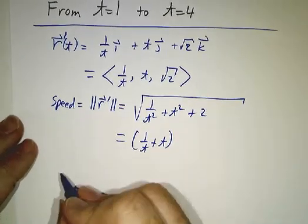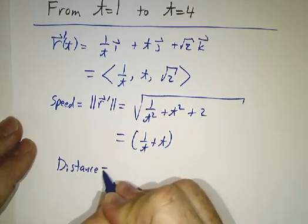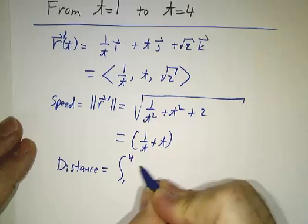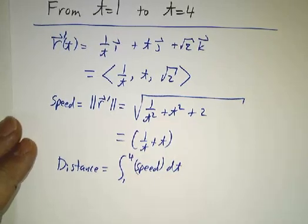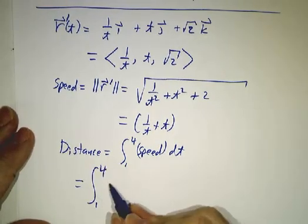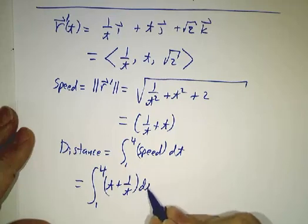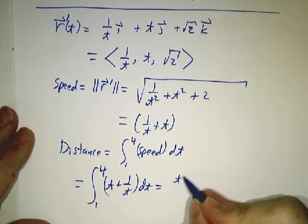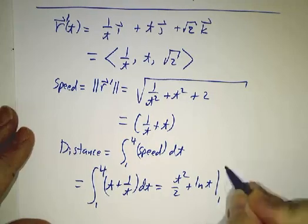And then our distance is the integral of speed dt. So that's the integral from 1 to 4 of t plus 1 over t dt. So we get t squared over 2 plus natural log of t evaluated at 1 and at 4.